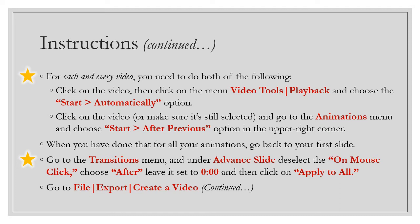Now, for every single video — each and every one — you need to do the following or this will not work. Click on the video so it is selected, and up at the top when you click on a video you'll see a menu option that only appears when a video is selected: Video Tools. One of those options says Playback. Under Video Tools Playback, select 'Start Automatically.' That means the video will play automatically when you start the slide.